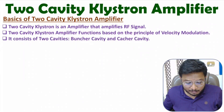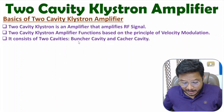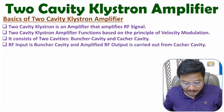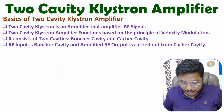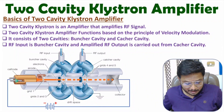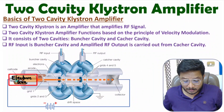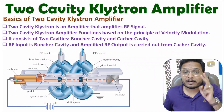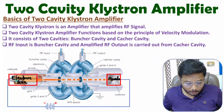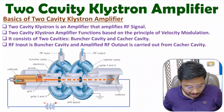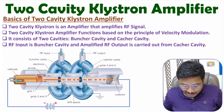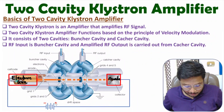In the structure of two-cavity klystron amplifier, we have two cavities. The first cavity is the buncher cavity and the second cavity is the catcher cavity. The buncher cavity is connected with the RF input signal, and the catcher cavity is connected with the amplified RF output. In the basic structure, we have a cathode connected with the electron gun, and an anode connected with the collector.